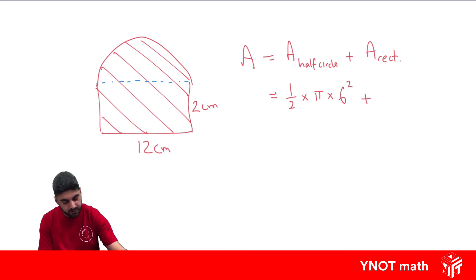So we get times it by 6 squared. Plus the area of the rectangle, which is the length times the breadth. So we're going to get 12 times 2. So here we're going to get 18 times pi, because 6 squared is 36 and half of 36 is 18. Plus 12 times 2, which is 24.